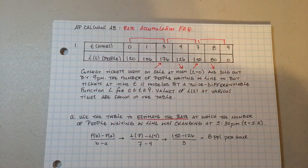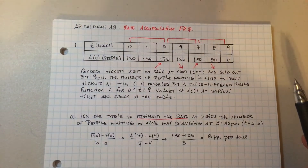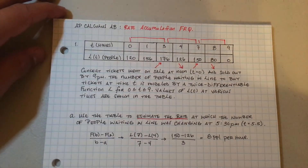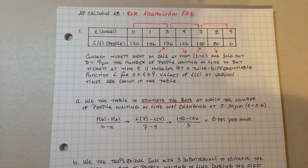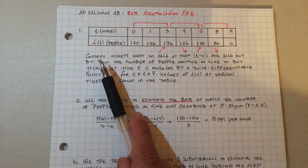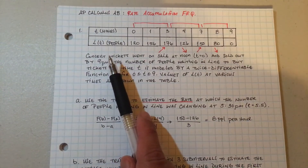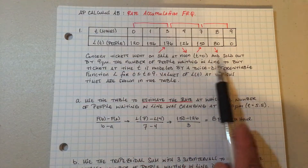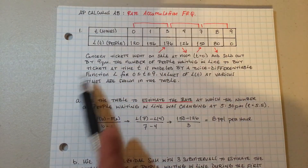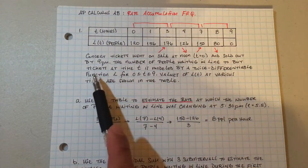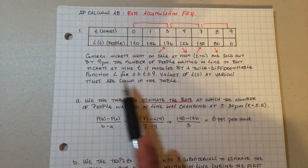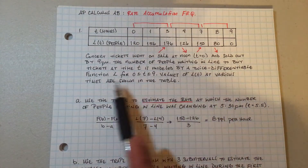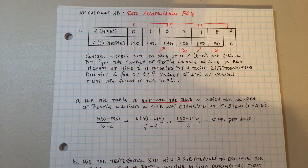Hey guys, today I want to go ahead and do a couple more rate accumulation FRQ problems. I want to go ahead and do the problems to facilitate time. The first problem is from 2008 — it's about concert tickets that went on sale at noon and sold out by 9 p.m. The number of people waiting in line at time t is modeled by a twice-differentiable function, and values of L(t) at various times are shown in a table.